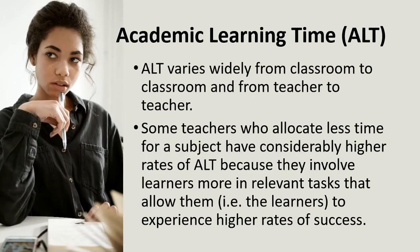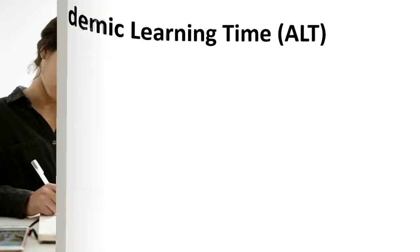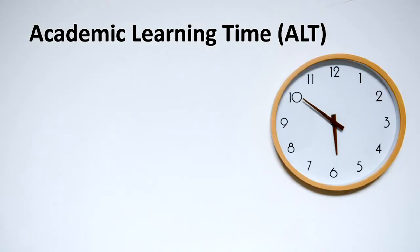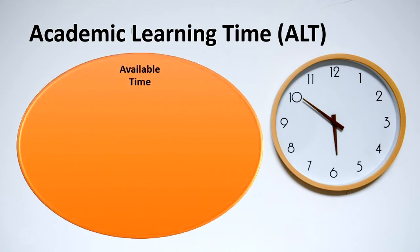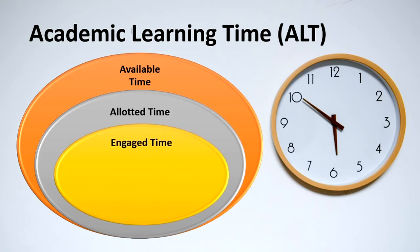Academic learning time varies widely from classroom to classroom and teacher to teacher. Some teachers who allocate less time for a subject still have a considerably high rate of academic learning time because they involve learners more in relevant tasks that allow them to experience higher rates of success. The relationship between time types is: we have maximum available time, then allotted time for a subject, then engaged time in our period, and finally academic learning time where actual learning takes place. You need to reduce the gap between these stages and increase academic learning time.